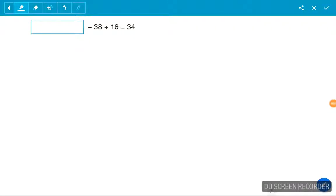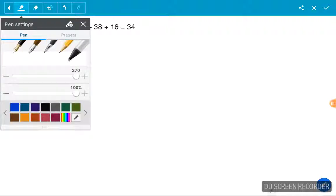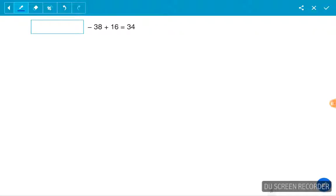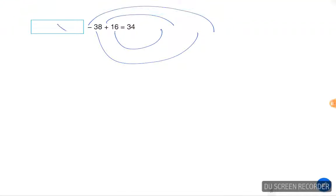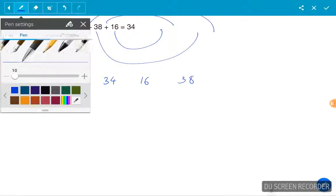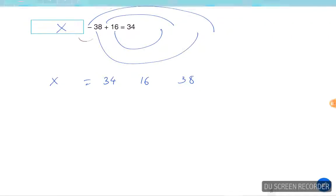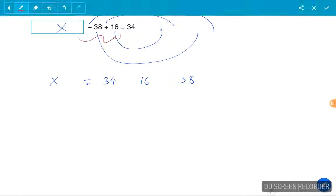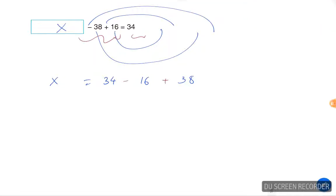This is a two-step problem, so what we do here is we have to move all of these signs to the other place to find the value of x. So x is equal to 34, move the 16 and the 38 from this side of the equation to this side. The plus will become minus and the minus will become plus.